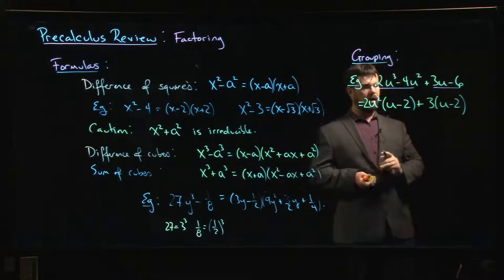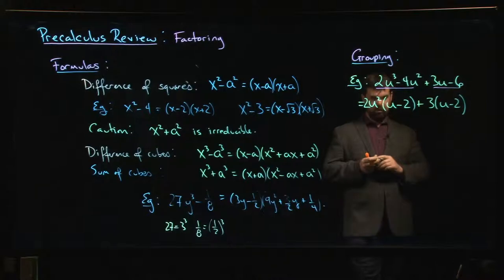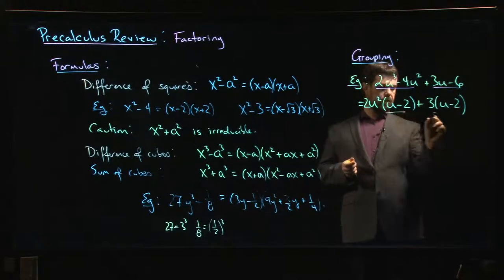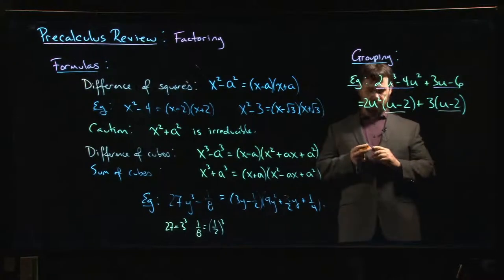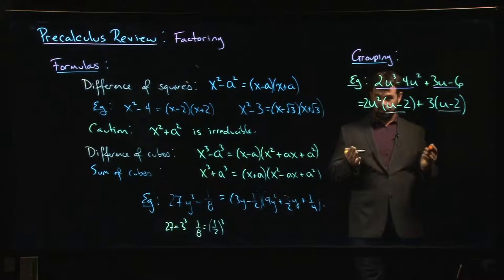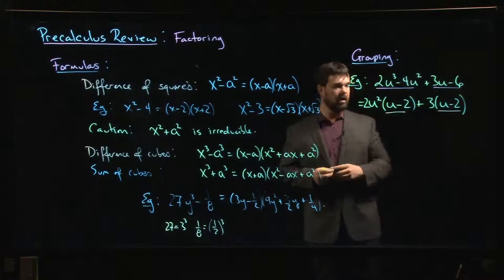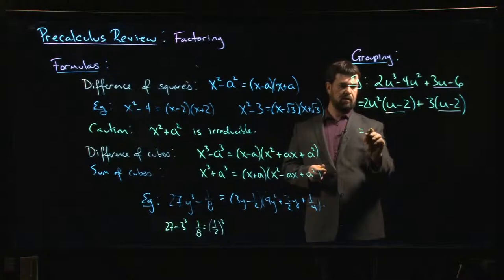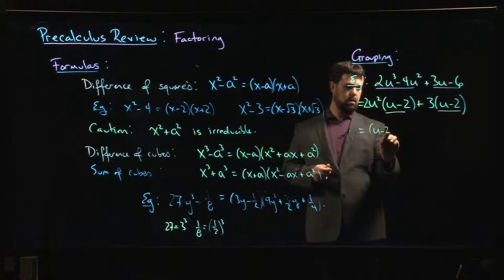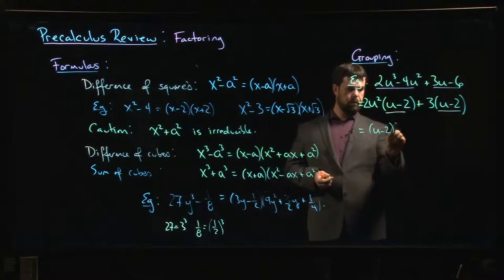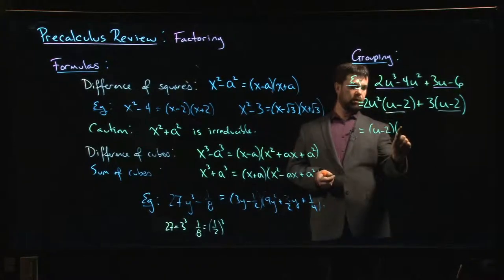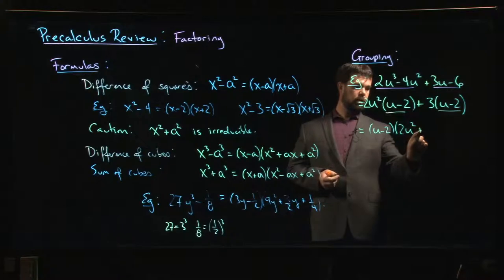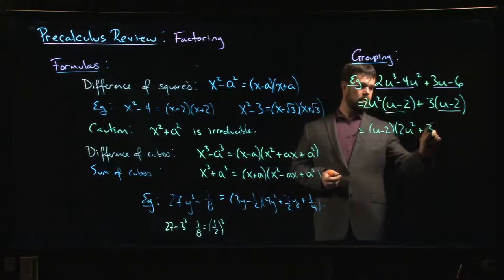Okay and in this case I get kind of lucky because you'll notice that once I've done that I have the same factor here and here. So think now about reversing the distributive property, I can pull that out as a common factor. So I factor out the u minus 2, and then I'm left with 2u squared plus 3.